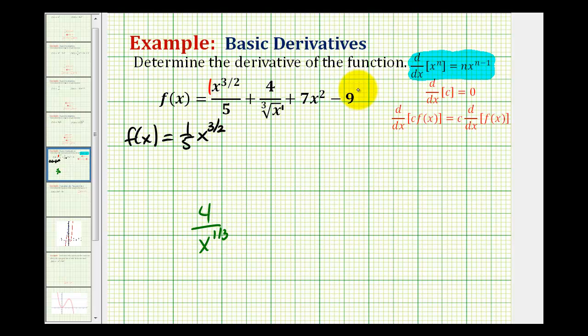But then to apply the power rule, we want this to be up in the numerator. So if we move this up to the numerator, we're going to have four x to the power of negative one-third. So that'll be our second term, plus four x to the negative one-third power.